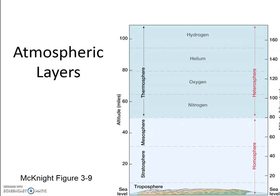There is ozone, which is three oxygen atoms bonded together, in both of these layers. The sources and the impacts of this ozone are quite different. In the troposphere, ozone is an anthropogenic pollutant. When we have poor air quality here locally in the Bay Area and have officials call spare the air days, tropospheric ozone is usually the culprit. It is created by a photochemical reaction with car exhaust and other air pollution, and it damages your lungs.